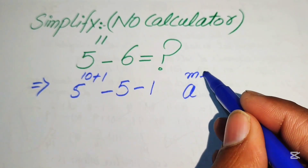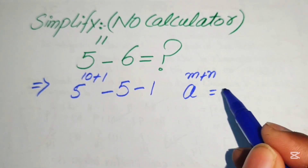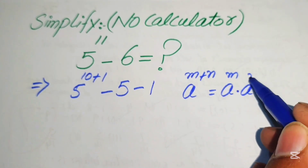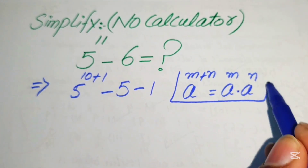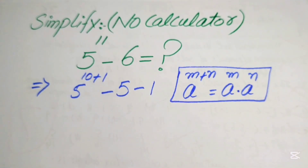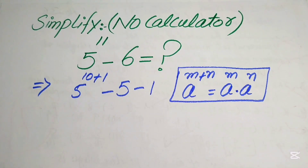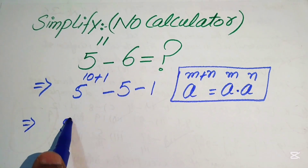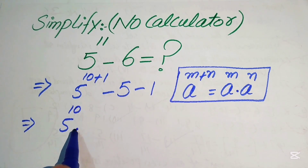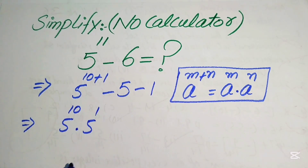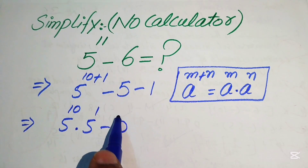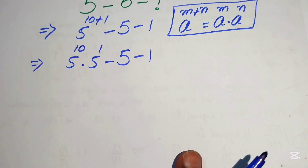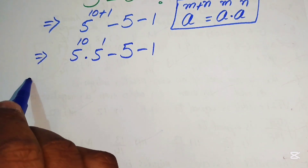Next we apply the exponential law: a to the power of m plus n equals a to the power of m times a to the power of n. We use this law on the first term only and write it as 5 to the power of 10 multiplied by 5 to the power of 1, minus 5, minus 1.